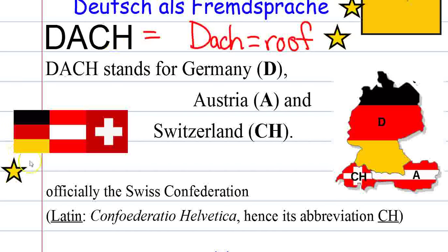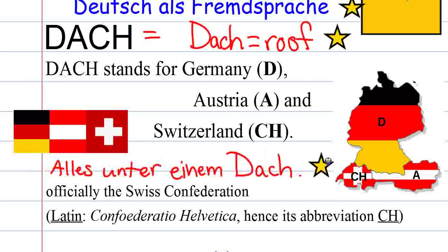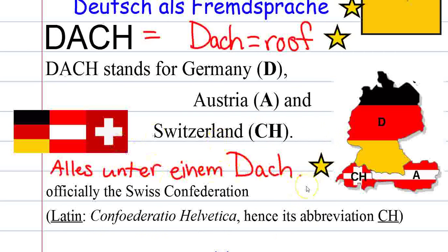DACH is really fun because 'Dach' by itself in German is a word — it means 'the roof.' You'll hear the phrase 'alles unter einem Dach,' meaning 'everything under one roof,' used a lot in reference to these three main German-speaking countries. We shouldn't forget Liechtenstein, which sits right between Switzerland and Austria, and Luxembourg, which also has German speakers.